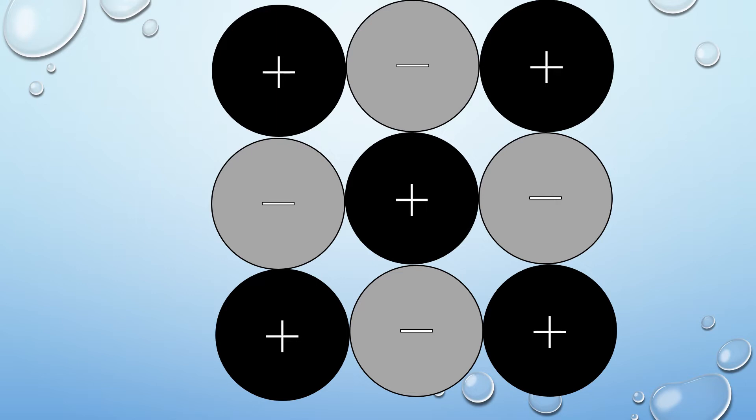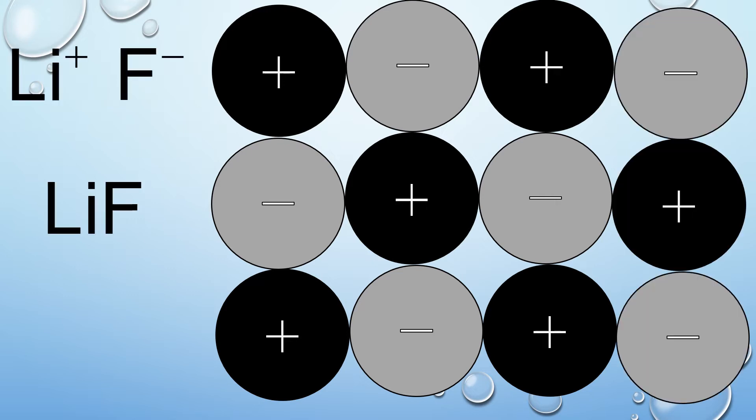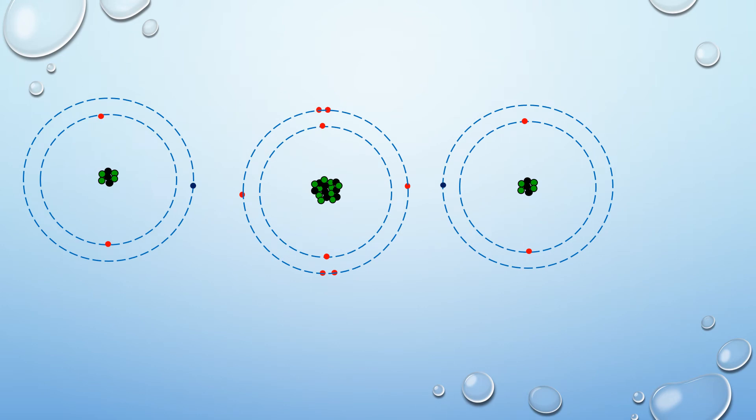We need to be able to explain why it is the ratio that it is. And these are the types of questions that we have to be able to write an answer to. As you can see here, this ionic compound has a ratio of lithium fluoride or 1 lithium to 1 fluoride.